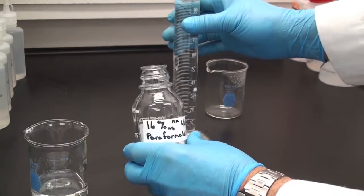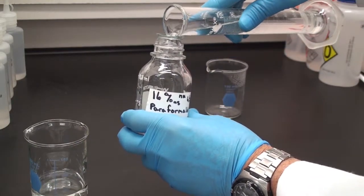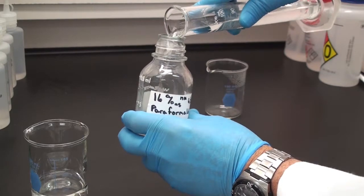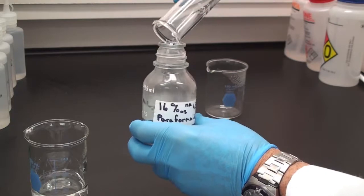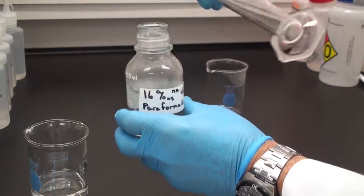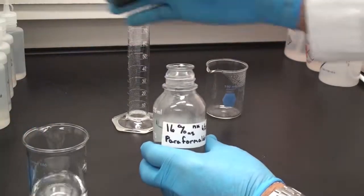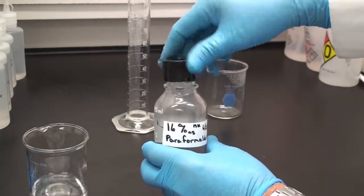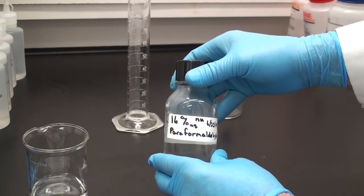So as I put that into my labeled bottle, 16% paraformaldehyde, that's a stock solution. Now you can use that to make Karnovsky's fixative or a fixative for labeling that you might use without glutaraldehyde. Straightforward and not too bad. Thank you very much.